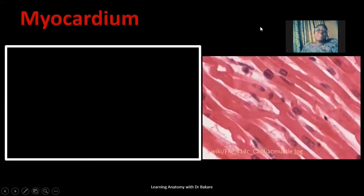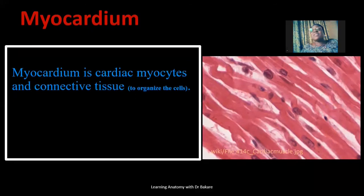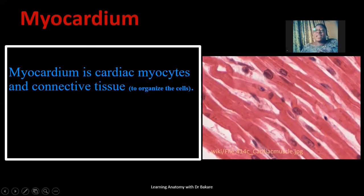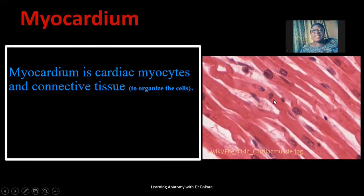The second layer — the middle layer — is the myocardium. The myocardium is made up of cardiac muscle, which is filled with cardiac myocytes and also connective tissue. The connective tissue helps to organize the cells in the pattern they are presented. So you see muscle fibers, and the specific type of muscle seen in the heart is cardiac muscle.